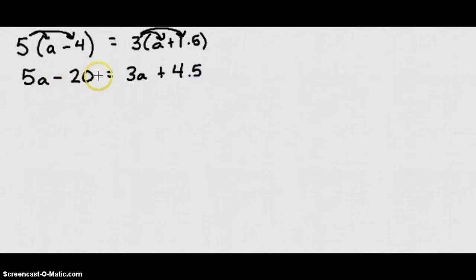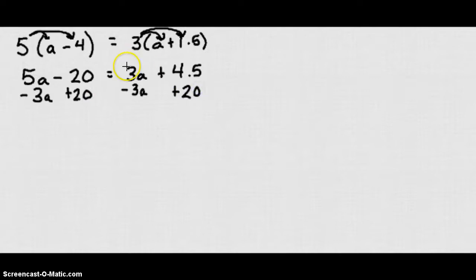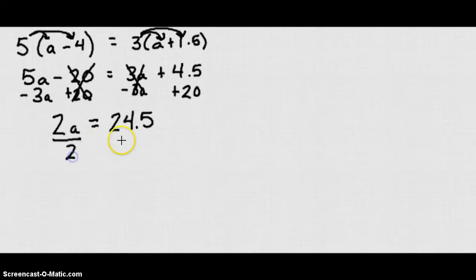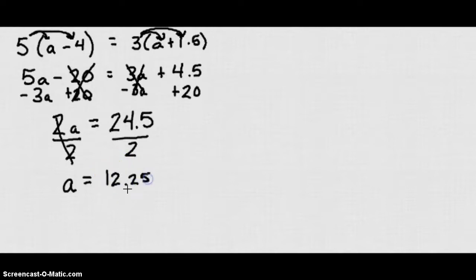Let's get all of our like terms on the same sides as each other. I'm going to take 3a away from both sides and add 20 to both sides. The 3a's cancel out on one side and the negative 20 cancels with positive 20 on the other side. I end up with 2a equals 4.5 plus 20 which is 24.5. Dividing both sides by 2 gives a equals 24.5 over 2, which is 12.25.